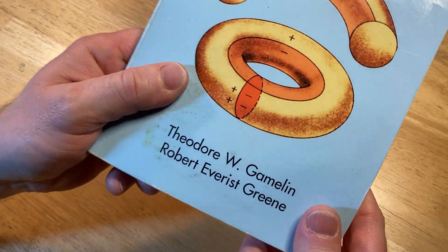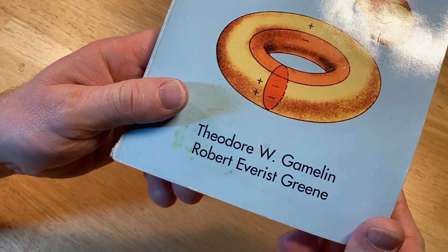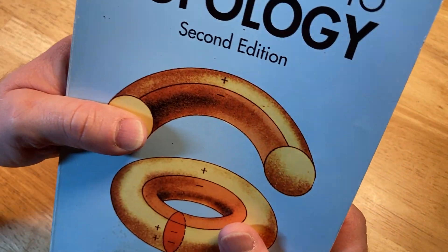Thank you, Gamelin and Green, Theodore W. Gamelin and Robert Everest Green. It's called Introduction to Topology. It's a second edition. This is a reprint. It's a Dover book.